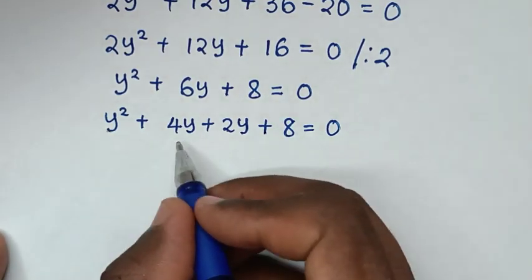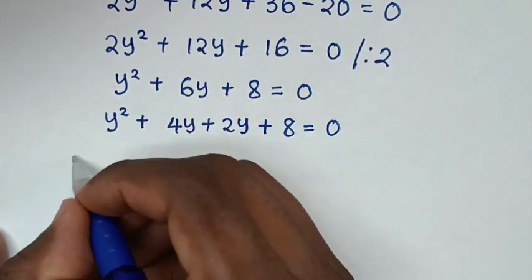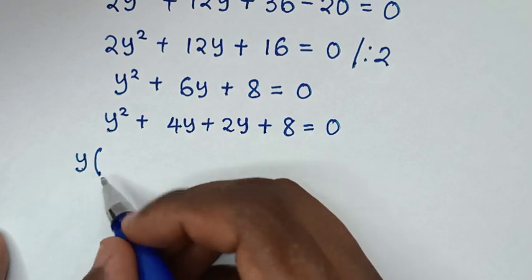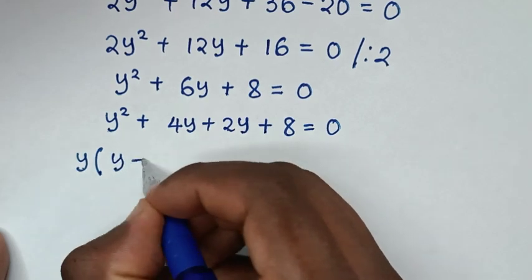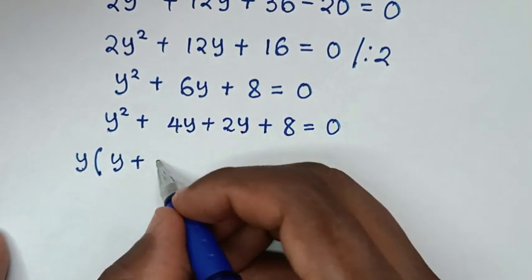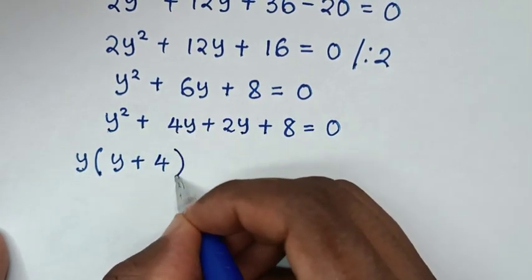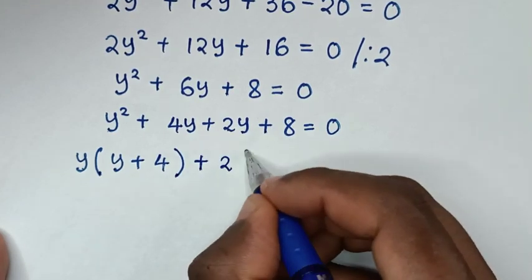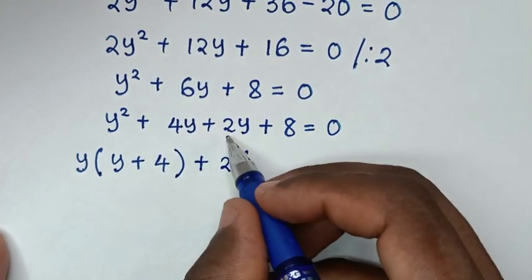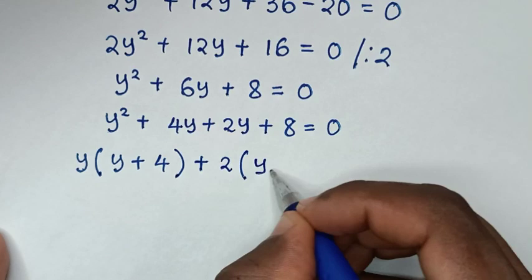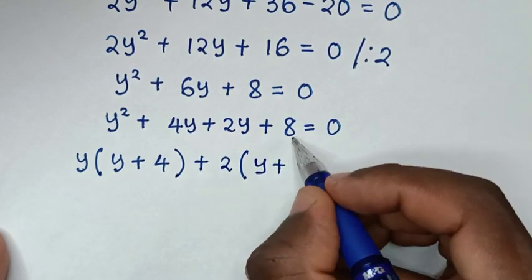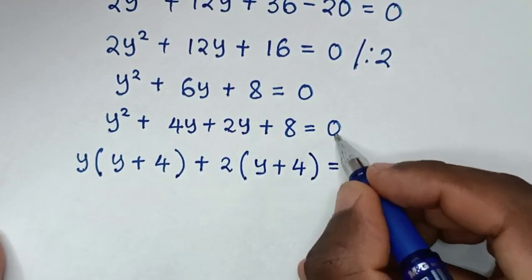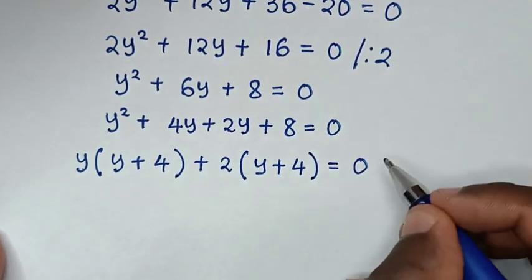From the first two terms, y is common: y squared divided by y is y, plus 4y divided by y is 4, giving y(y plus 4). From the last two terms, 2 is common: 2y divided by 2 is y, plus 8 divided by 2 is 4, giving 2(y plus 4). So we have y(y plus 4) plus 2(y plus 4) equals 0.